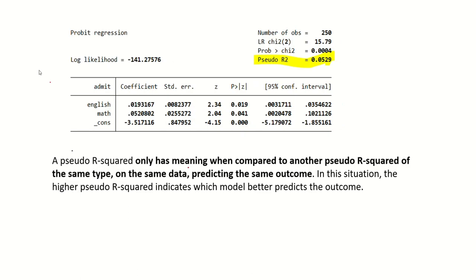Then we have the results for pseudo R-squared which is 0.0529. We cannot explain pseudo R-squared as we explain R-squared in simple OLS or multiple OLS. Basically, pseudo R-squared only has meaning when compared to another pseudo R-squared of the same type on the same data predicting the same outcome. The higher pseudo R-squared indicates which model better predicts the outcome.